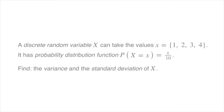We now learn how to find the variance as well as the standard deviation of a discrete random variable, and we'll do that with an example. We're told that a discrete random variable X can take on the values 1, 2, 3, and 4. We're also told that it has a probability distribution function: the probability that X equals x is equal to x over 10. We're then asked to find the variance as well as the standard deviation.